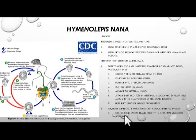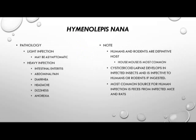The cysticercoid larvae, if infected this way, travel directly to the intestinal villus for attachment and production of gravid proglottids. The pathology of Hymenolepis nana can be asymptomatic with light infection, while heavy infection can result in intestinal enteritis, abdominal pain, diarrhea, headache, dizziness, and anorexia. Humans and rodents are the definitive hosts, while the common house mouse is the most commonly found source. The most common source of human infection is feces from infected mice and rats.